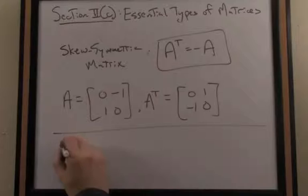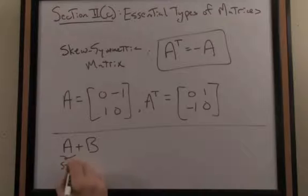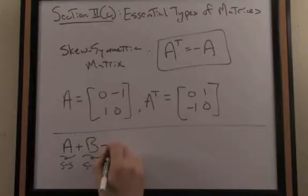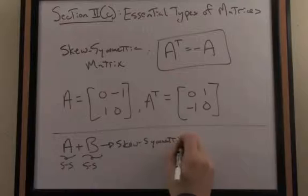Another property that's interesting with a skew-symmetric matrix is that if I have two skew-symmetric matrices, A is skew-symmetric, B is skew-symmetric, and if I add them together, that sum is also skew-symmetric.